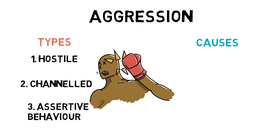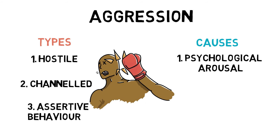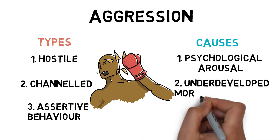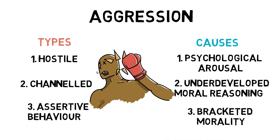The causes of aggression can usually be broken down into three categories. Psychological arousal, in which anger towards an individual or group causes an increase in arousal — this will usually happen if the individual is highly motivated, such as during a derby match. Underdeveloped moral reasoning, in which players with lower moral reasoning are likely to be more aggressive. And bracketed morality, in which there is a double standard of accepting aggressive behaviour in sport but not in everyday life, such as in martial arts or boxing.